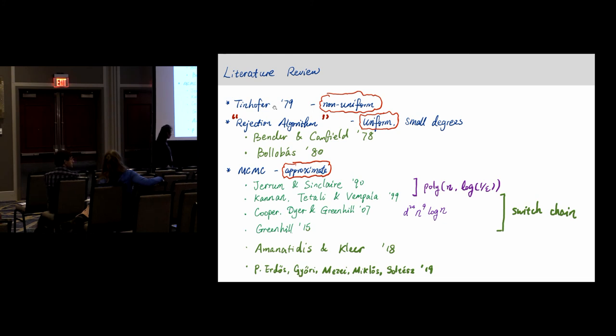The mixing time is polynomial in n and polynomial log of 1 over epsilon, where epsilon is the tolerance error. Later on, people started to feel that it's nicer to actually work on the Markov chain on the same state that you want to sample rather than a bigger state. Because in the paper by Jerrum and Sinclair, the types of degree sequence you can handle is called the P-stable degree sequence, which is not really easy to verify. It relies on some kind of enumeration result.